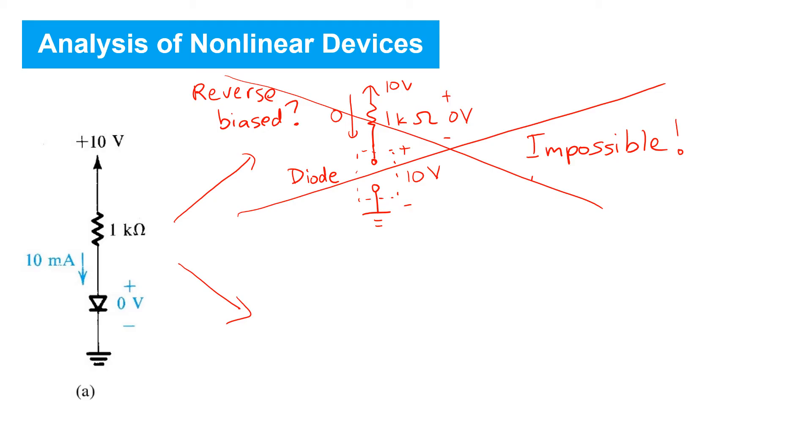The truth is that this diode is forward biased. Using our ideal diode assumption, we can therefore replace it with a short circuit. As shown here.